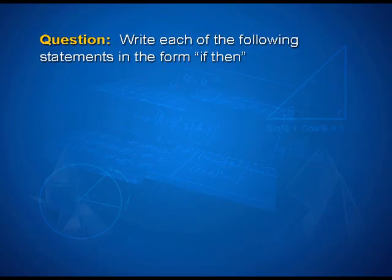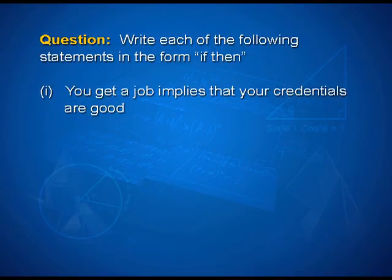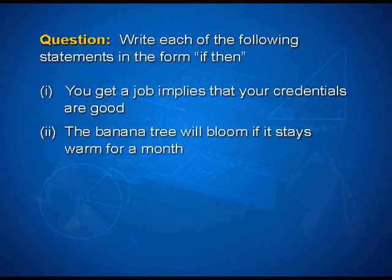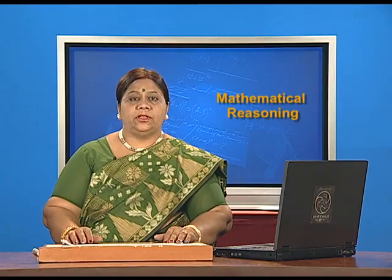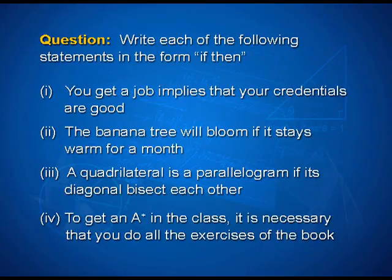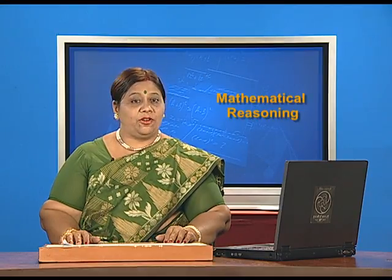So students, today we studied about quantifiers and implications. It is time to note down the home assignment. Write each of the following statements in the form 'if-then': First, you get a job implies that your credentials are good. Second, the banana trees will bloom if it stays warm for a month. Third, a quadrilateral is a parallelogram if its diagonals bisect each other. Fourth, to get an A-plus in the class, it is necessary that you do all the exercises of the book. In the next session, we shall study about contrapositive and converse. Thank you.